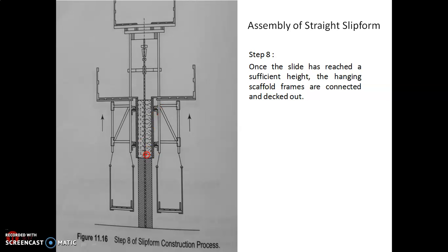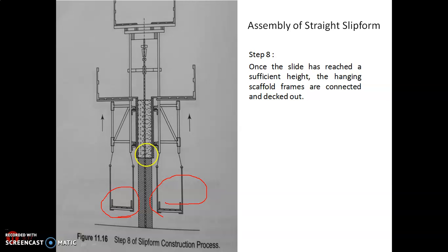In step 8, once the slide has reached a sufficient height, you attach the hanging scaffolding frames, called the mason scaffold. These are the different steps involved in the assembly of the slip form structures.